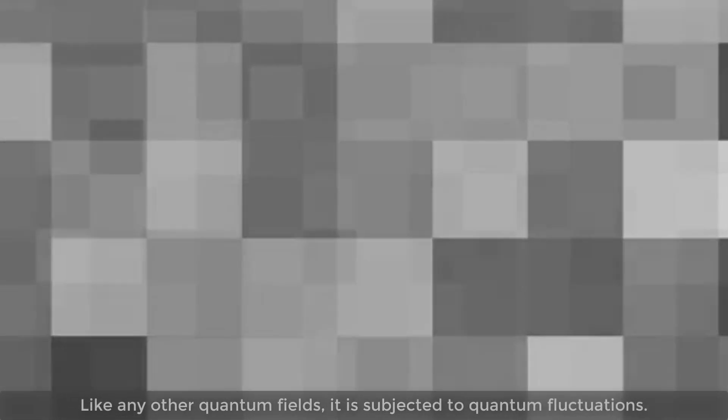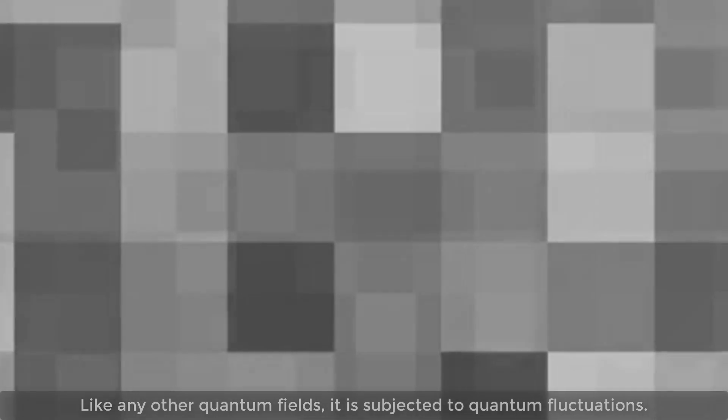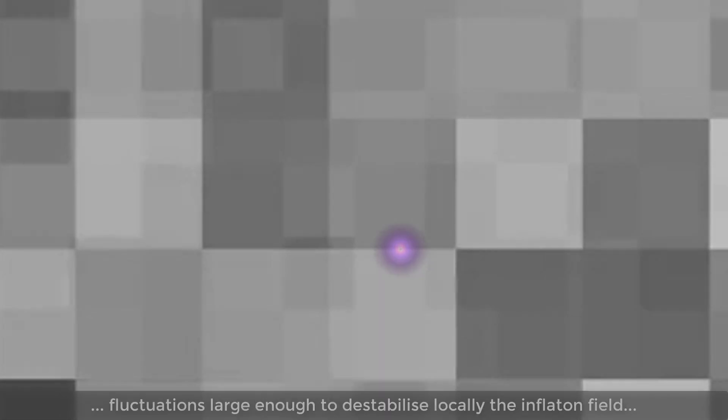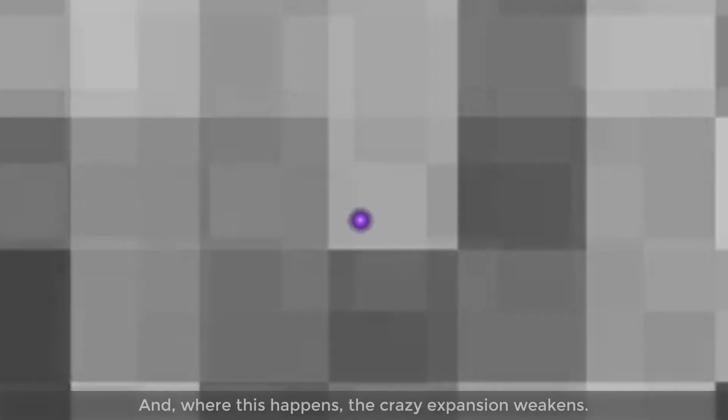That space is an inflaton field. Like any other quantum fields, it is subject to quantum fluctuations. Most of these are small, but because time is infinite, fluctuations large enough to destabilize locally the inflaton field will occur, and where this happens, the crazy expansion weakens.